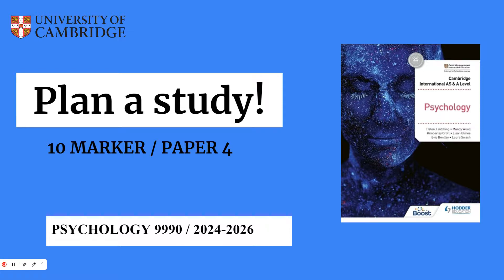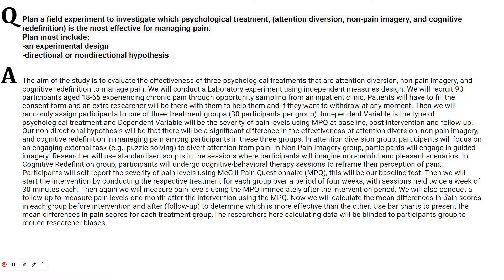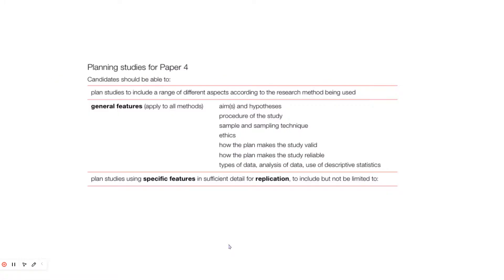You can pause the video and read it. It's basically a question about the planning of a study, and this is a sample. You're most probably going to start this study with the aim obviously. Your syllabus also mentions what are the important features you have to mention in the planning of the study: aim, and if they ask about hypotheses you can write it; if they don't ask, it's up to you. Then the procedure of the study obviously.